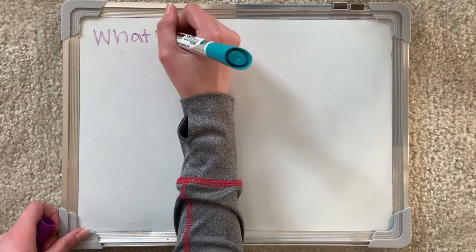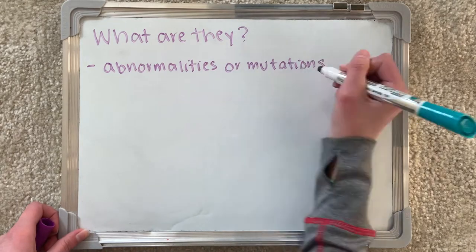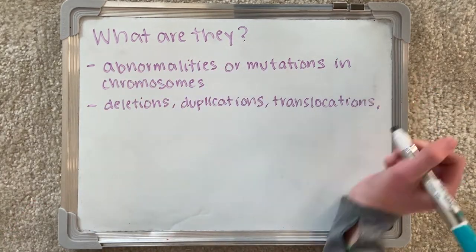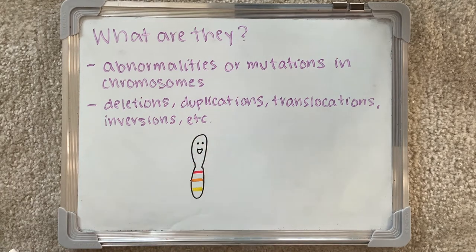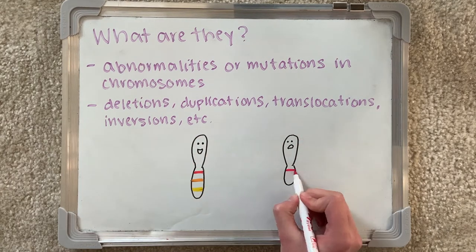Let's begin by explaining what chromosomal aberrations are. They are basically abnormalities or mutations found among chromosomes and they can have varying effects. There are a number of different kinds of aberrations, including deletions, duplications, and translocations.